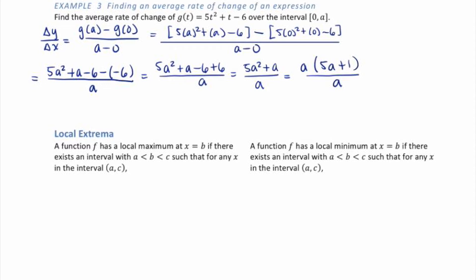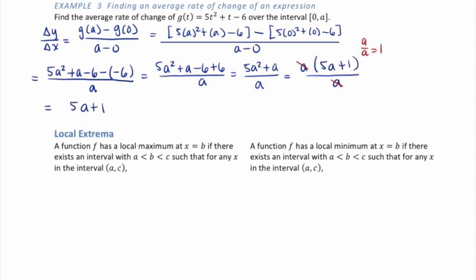Use caution here. A very common mistake is to cancel incorrectly and write 5a squared — that's wrong. Canceling is undoing multiplication, which requires division. We need to factor out an a from the numerator: a times (5a plus 1), and then a divided by a equals 1, so those cancel. This leaves us with 5a plus 1 as our final answer for the average rate of change.